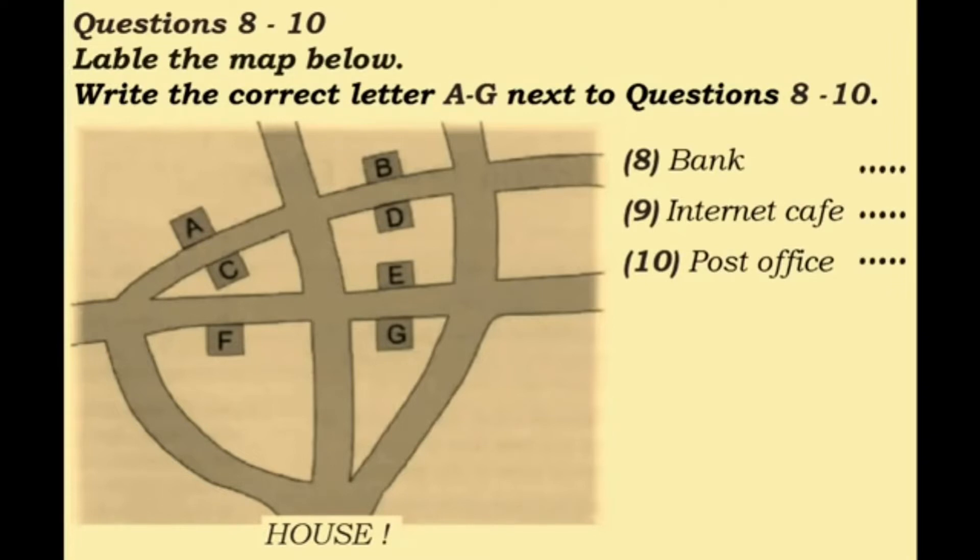Are you familiar with this area? A bit. Actually, there are a few things that I'd like to know the location of. A bank, for example. Yes, there's one quite close. You just go up to the junction near the house, the one where four roads meet, and go straight ahead and then take the second left. It's a little way down there on the left-hand side. That's convenient.